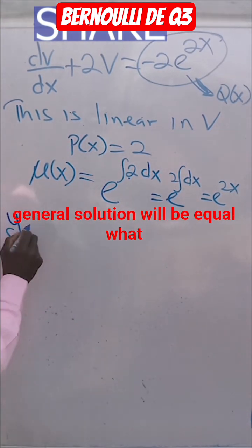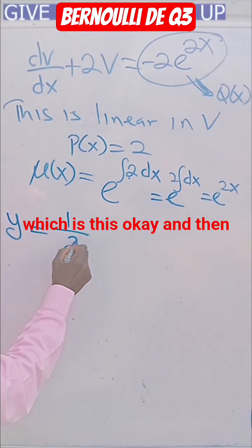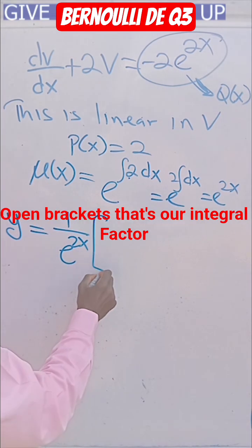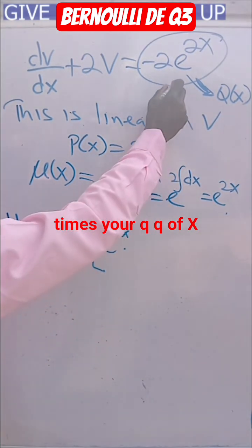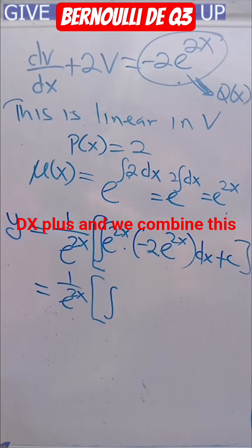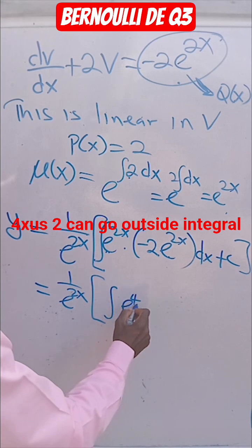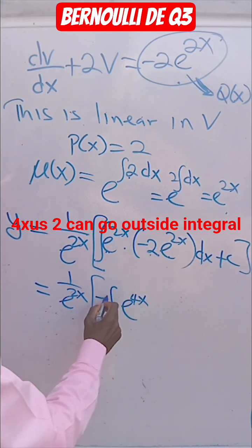The general solution will be equal to 1 over the integrating factor, which is like this, and then open brackets. There's integrating factor times your Q, Q of X. Don't forget your integrals and then dx. If we combine this one together, that will be e^4x. The minus 2 can go outside the integral.